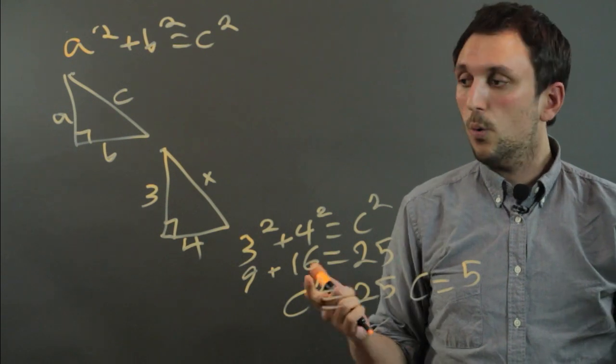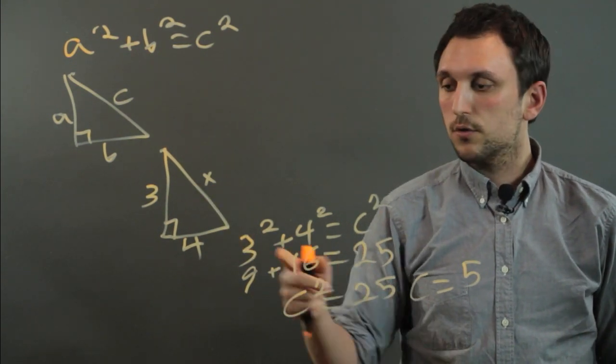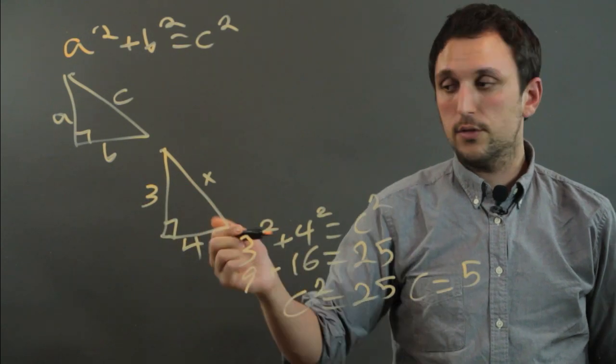Now, we can do this, and this is actually called a special right triangle. So 3, 4, 5, they're all integers.